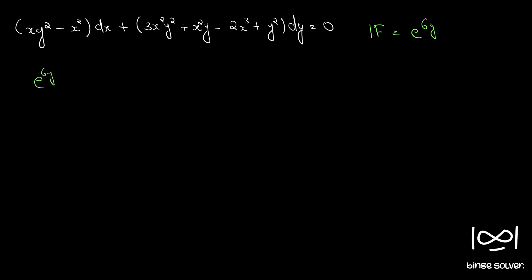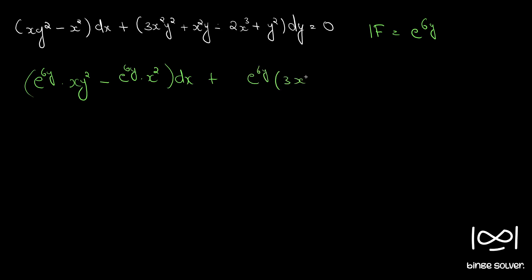Multiplying the integrating factor e^(6y) throughout the differential equation, our new equation becomes: e^(6y)(xy² - x²)dx + e^(6y)(3x²y² + x²y - 2x³ + y²)dy = 0. This gives us the new M and new N.